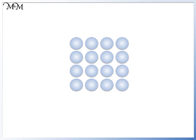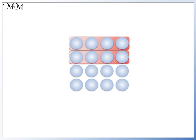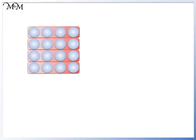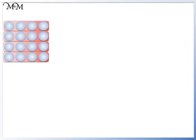For example, here we have 16 counters. We want to share these into groups of the same number. We can begin with groups of 4. We have 1, 2, 3, 4 groups of 4 counters. We can say that we have 4 lots of 4 counters, so 4 times 4.